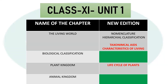First, Class 11, Unit 1 — that is 4 chapters: Living World, Biological Classification, Plant Kingdom, Animal Kingdom. If you are aware of the red color markings, those topics are removed. If you are aware of the green color markings, those topics remain the same. In the Living World, there are two topics that can be read: Taxonomical Aids and Characteristics of Living. In the new book, Hierarchical Classification, Kingdom, and Nomenclature topics have been removed. So we can commit to just those two topics: Taxonomical Aids and Characteristics of Living.